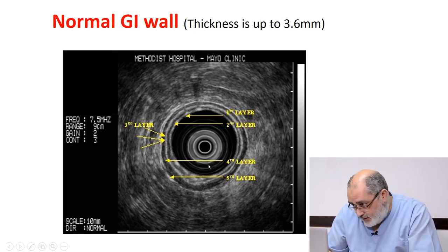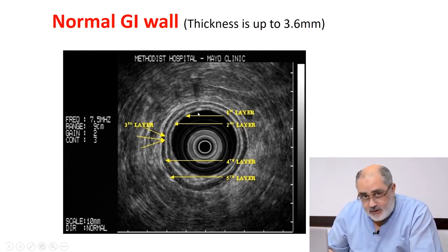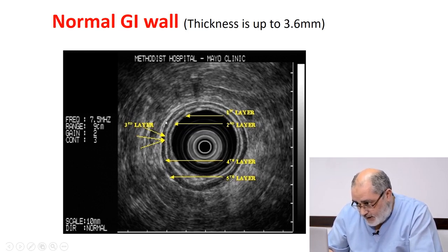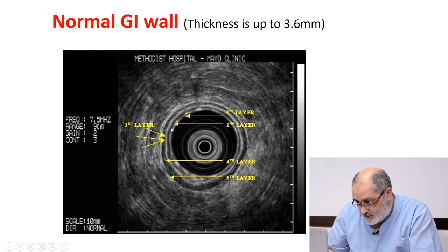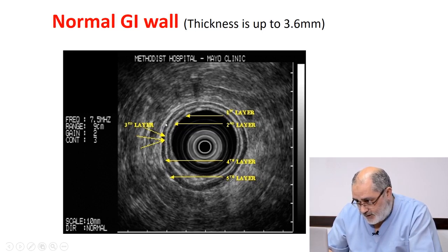This is a normal GI wall from the esophagus to the rectum by radial echoendoscope. Here we can identify five layers: three hyperechoic layers and two hypoechoic layers, two muscular hypoechoic layers in between. The innermost layer is the mucosa (hyperechoic), the second layer is the muscularis mucosa (hypo), the third layer is the submucosa (hyper), the fourth layer is the muscularis propria (hypo), and the fifth layer is the adventitia or serosa.